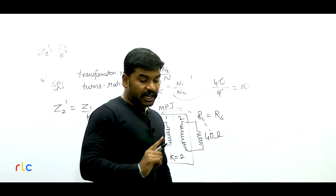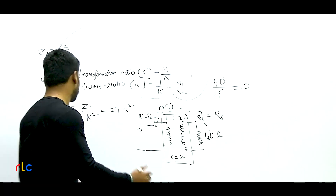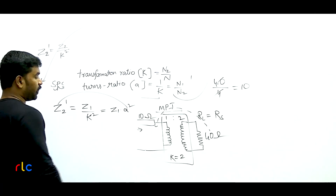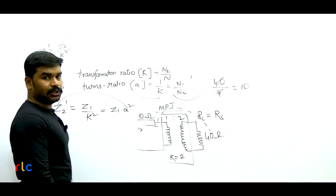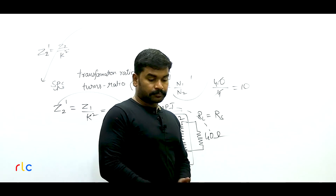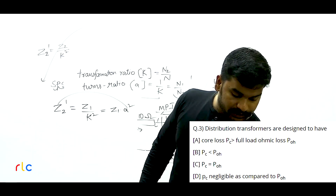Next question: In a transformer, exciting current is made up of two components — magnetizing current IM and core loss current IC — with negligible impedance drop. The question states both IM and IC lag supply voltage V1 by 90 degrees, and asks about the phasor relationship.